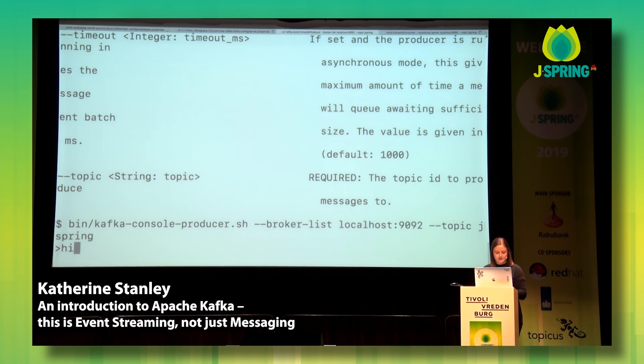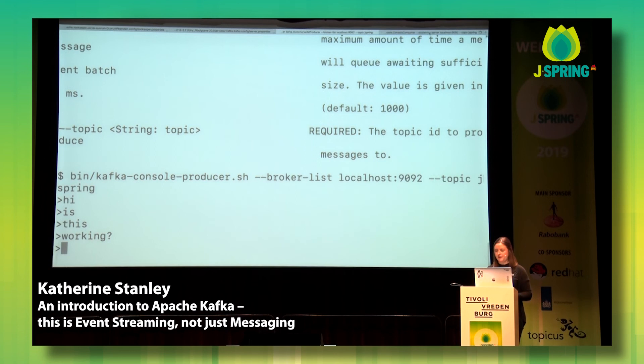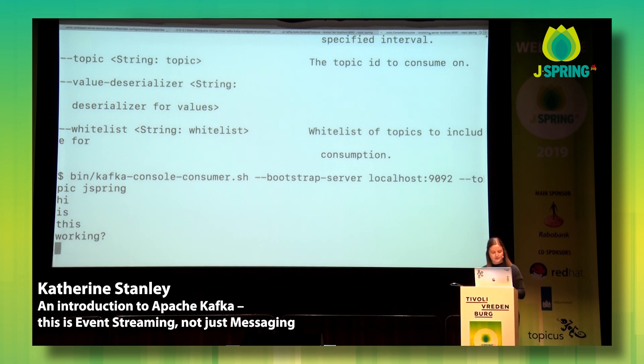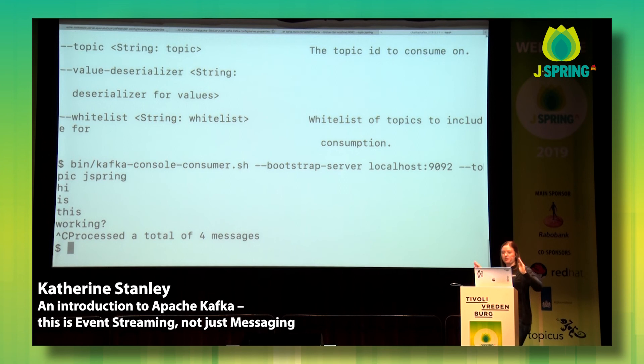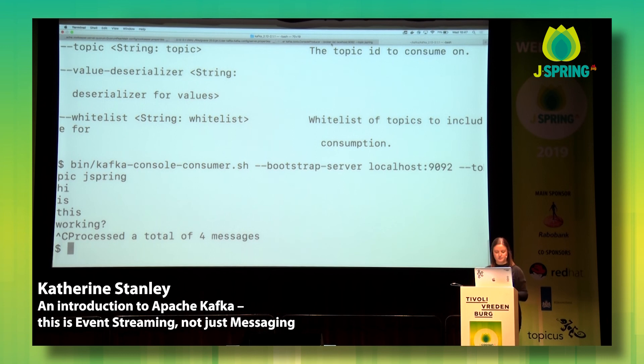So that's just sitting there now. I go back to my producer and type 'hi, is this working?' Then switching back to my consumer, you can see all the different messages coming through, and when I kill that, you can see it's processed a total of four messages. That is the quickest and easiest way to get started with Kafka — I've run the Kafka broker, run Zookeeper, created a topic, and run a producer and consumer, and it all worked quite nicely.